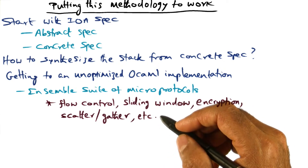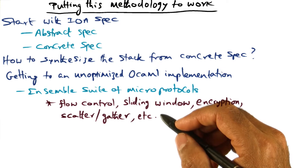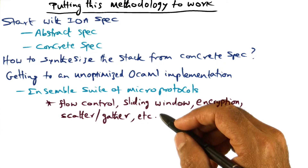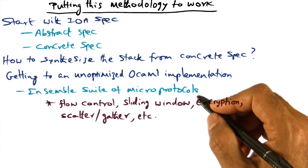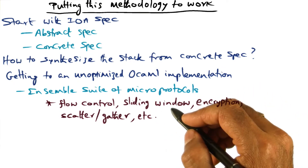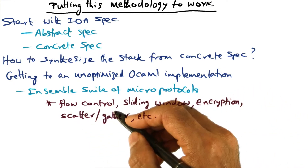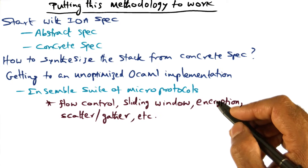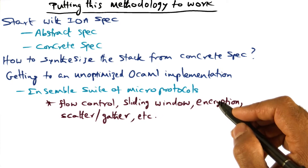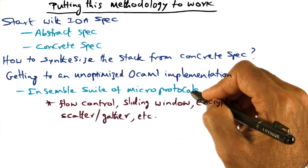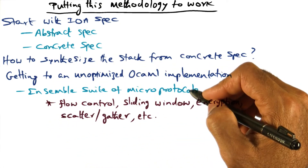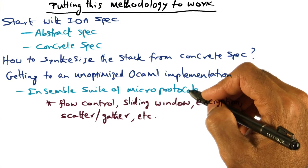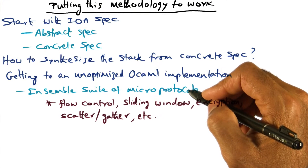If you think about a protocol like TCP/IP, that protocol has a lot of features in it, and each of those features requires a non-trivial amount of code. For instance, TCP/IP has mechanisms for sliding window management, flow control, congestion control, and scattering and gathering packets to assemble messages into units that can be delivered to the application. The Ensemble suite of micro protocols has components for each of those functionalities in any complex transport protocol like TCP/IP.